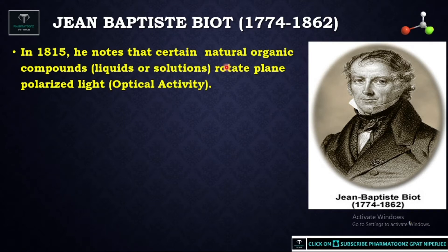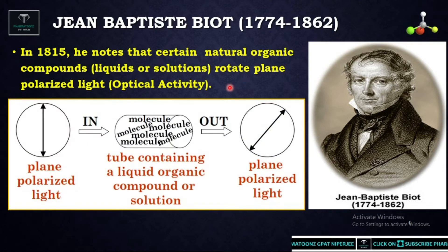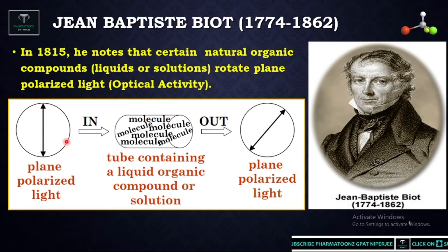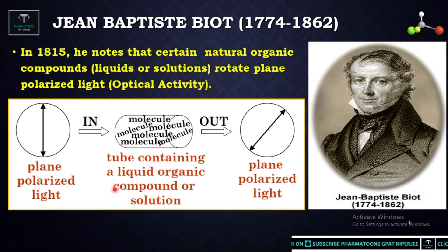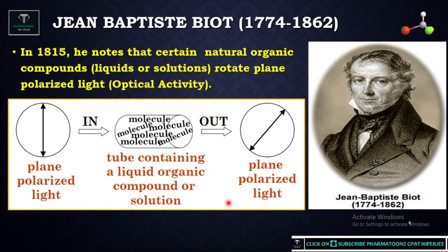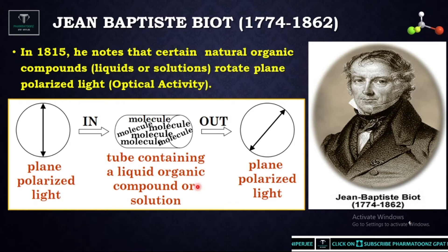To illustrate: plane polarized light, where light rays vibrate in one plane, passes through a sample tube containing various chiral molecules in liquid organic compounds or solutions, which causes the plane polarized light to rotate. Such compounds can rotate plane polarized light either to the right or to the left side.